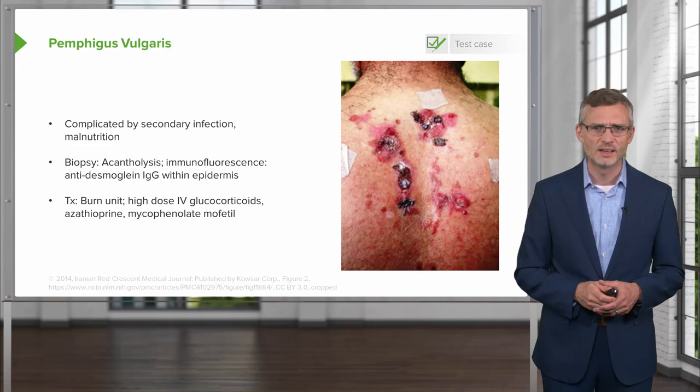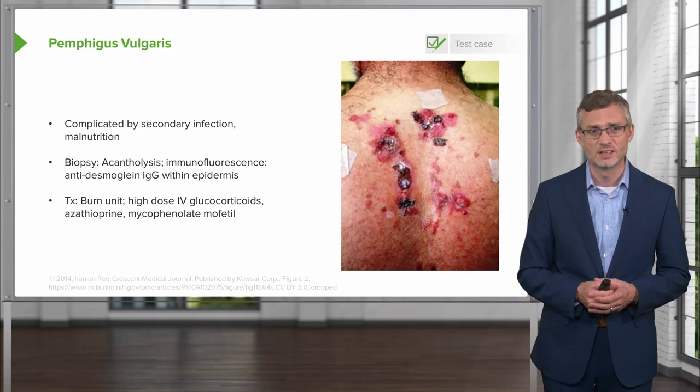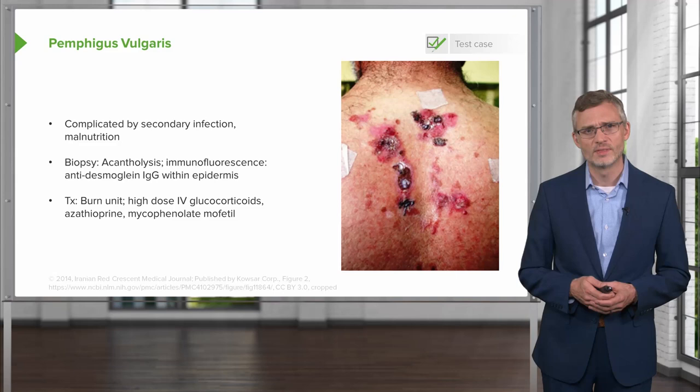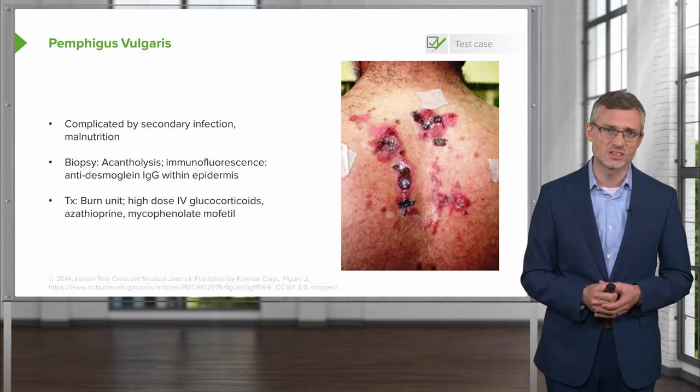With this disease, since it is such a severe disease with a relatively high fatality rate, you're going to have to send that person to a specialized burn unit where they can manage all the potential complications of having your skin not functioning. They are oftentimes treated with high-dose IV glucocorticoids, at least initially, to control the disease process. And then over time, you may add on steroid-sparing agents such as azathioprine or mycophenolate mofetil.